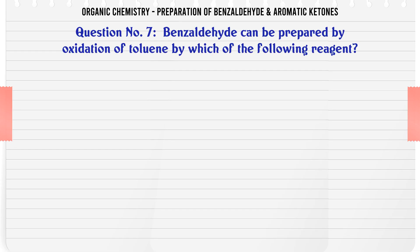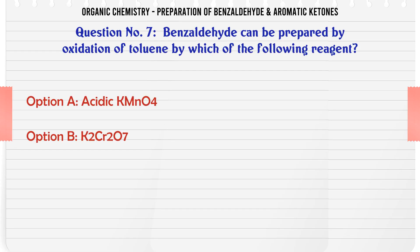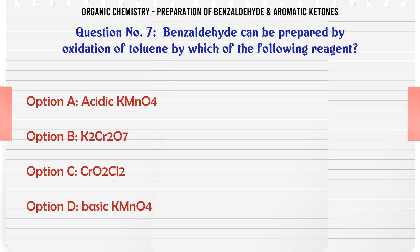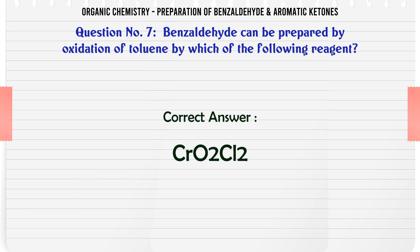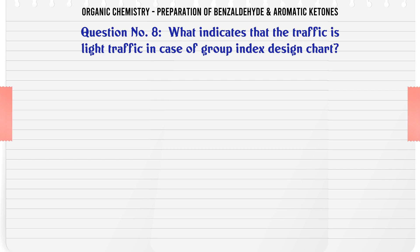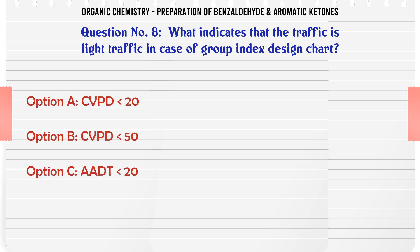Benzaldehyde can be prepared by oxidation of toluene by which of the following reagent? A. Acidic KMnO4. B. K2Cr2O7. C. CrO2Cl2. D. Basic KMnO4. The correct answer is CrO2Cl2.